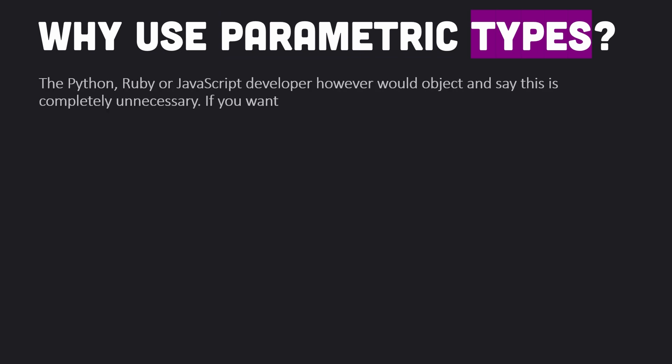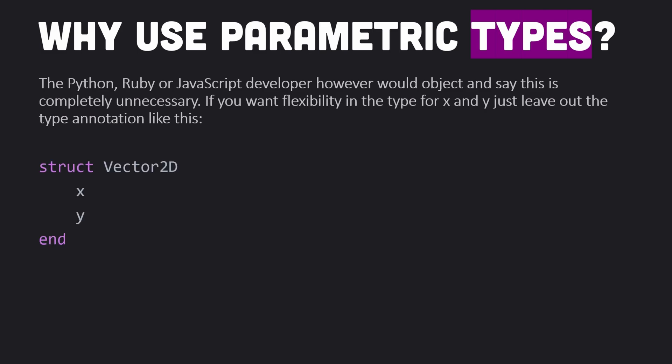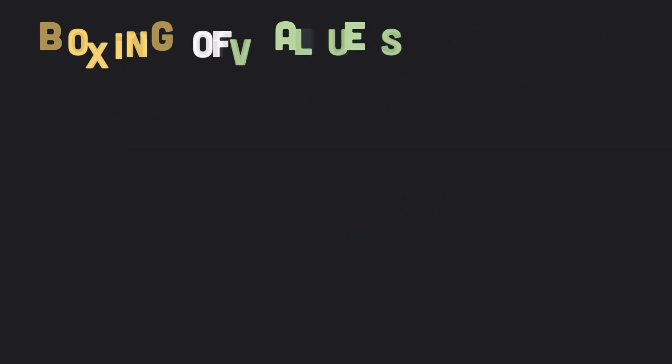Developers in other languages would object and say this is completely unnecessary. If you want flexibility in the type for x and y, just leave out the type annotation. This is possible, but we don't want x and y to be just any type — they should be some kind of number. Given that you already know about Julia abstract types, you probably have an obvious solution: just use a type annotation with Number. This is an entirely reasonable solution when performance does not matter. However, Julia was built specifically to support high performance computing, meaning code and types must be easily turned into efficient machine code with an optimal memory layout. Annotating x and y as abstract types is bad for performance because of boxing.